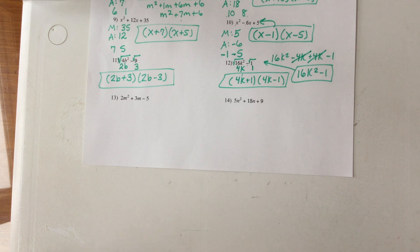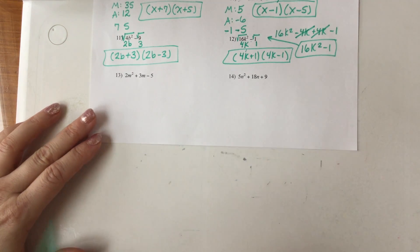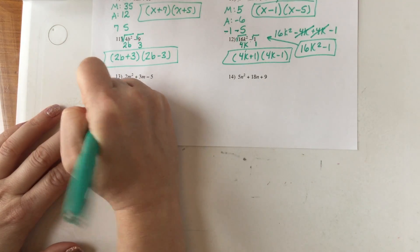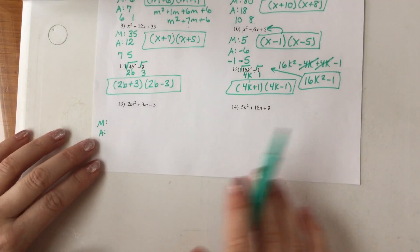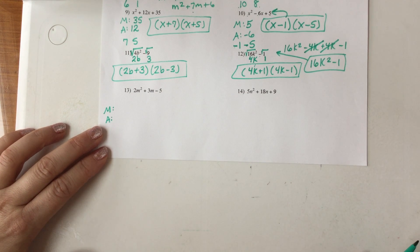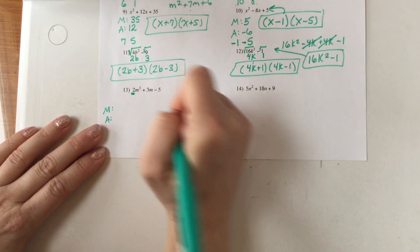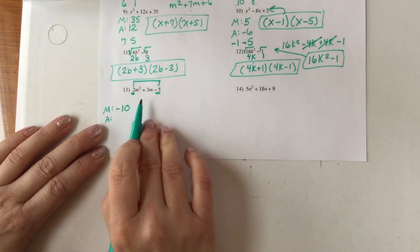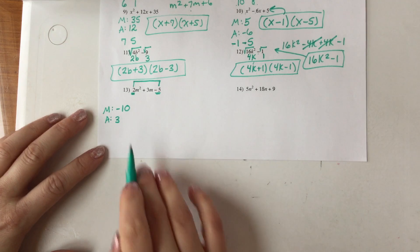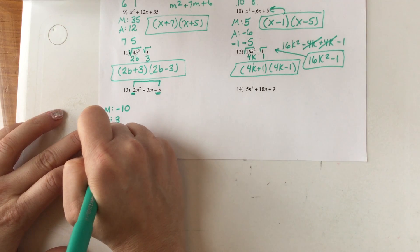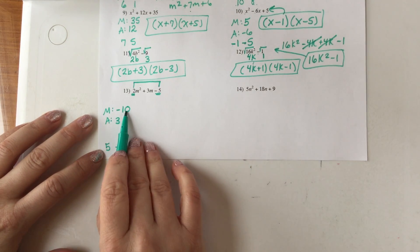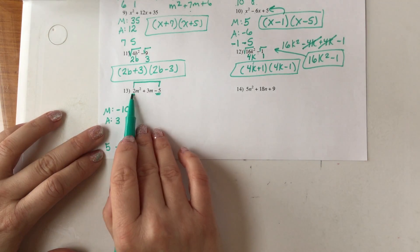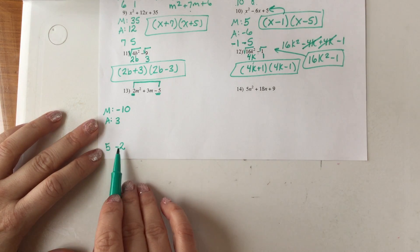Now the last method — we're combining a couple of these factoring techniques. For three terms where there IS a number in front of the squared term, you take the first term and multiply it by the last term. Here, positive 2 times negative 5 is negative 10. You still add to the middle, which is positive 3. Two numbers that multiply to negative 10 and add to positive 3 are 5 and negative 2. But because there's a number in front, I can't just write (m + 5)(m - 2) directly.